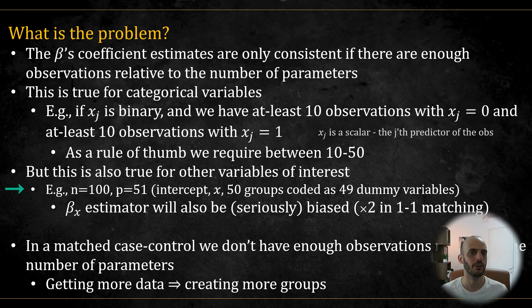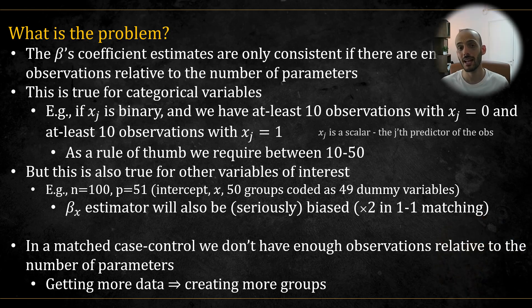So for example, in a scenario where we have only 100 observations, but 51 parameters - an intercept, an x parameter, and 50 groups that are coded as 49 dummy variables - here the beta of x will also be seriously biased. And it can be showed that asymptotically the estimator will be doubled its true value for one-to-one matching.